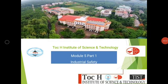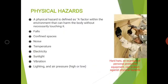Good morning students. We'll start with the fifth module — this is the first part of the fifth module lectures. The first topic is physical hazards. A hazard is something that can cause harm to people. A physical hazard is a factor within the environment that can harm the body without even touching it, for example falls that workers experience, confined spaces.